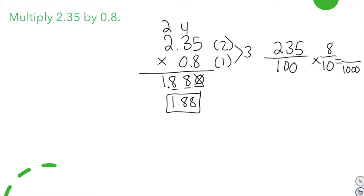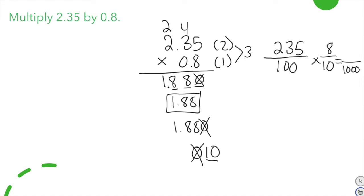If written unsimplified it would be 1 and 880 thousandths — to the thousandths place. We drop the trailing zero because it holds no value, just like we don't write 010 years old; we just say 10.